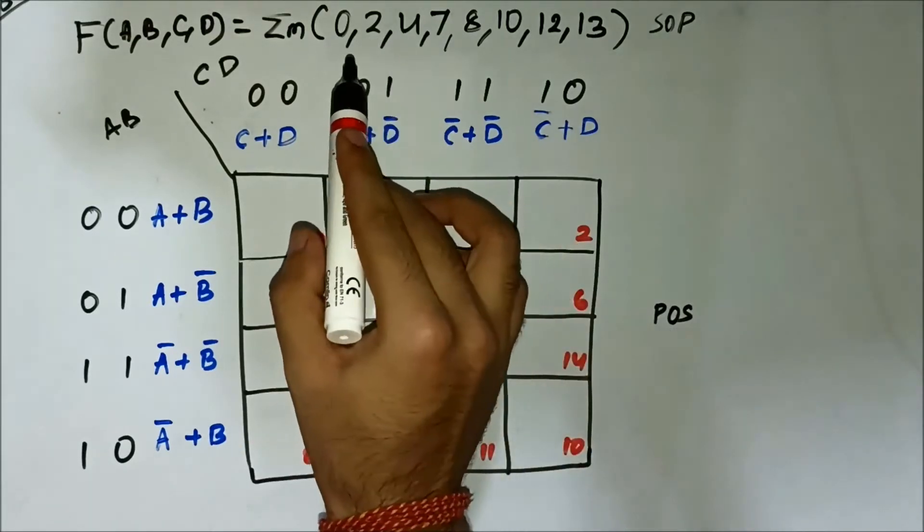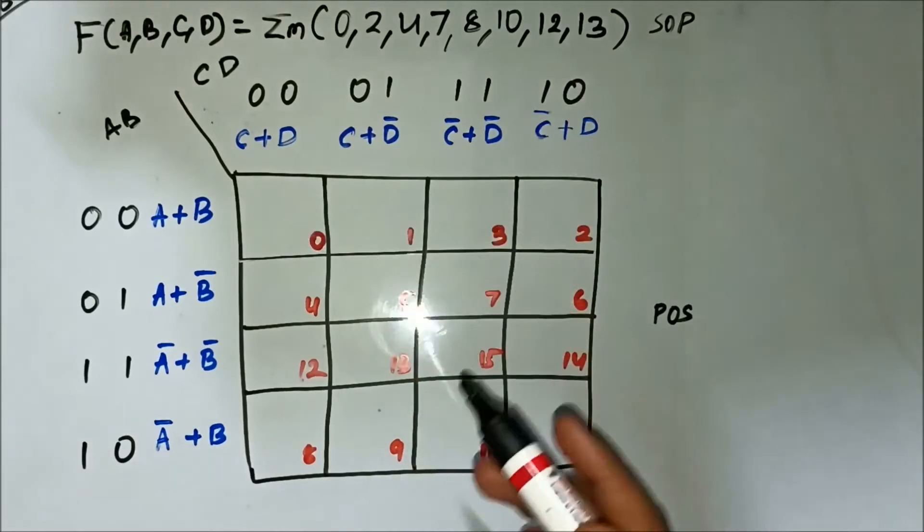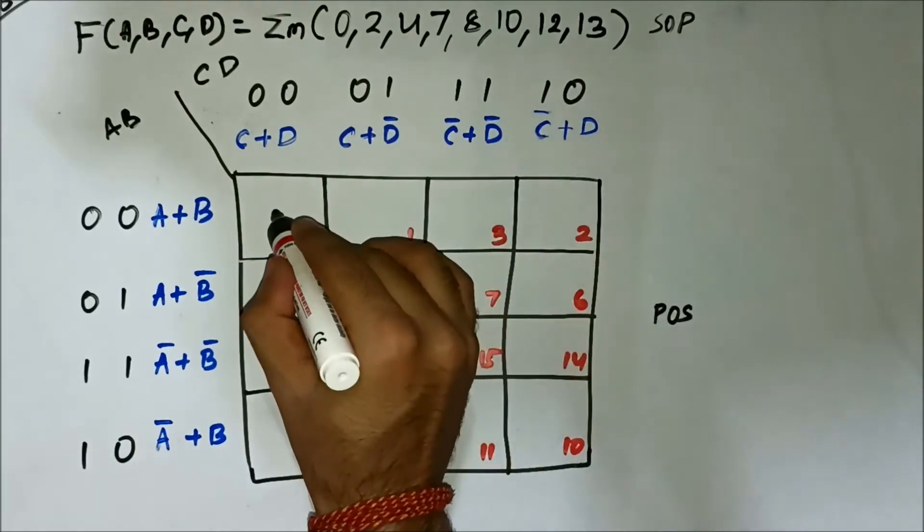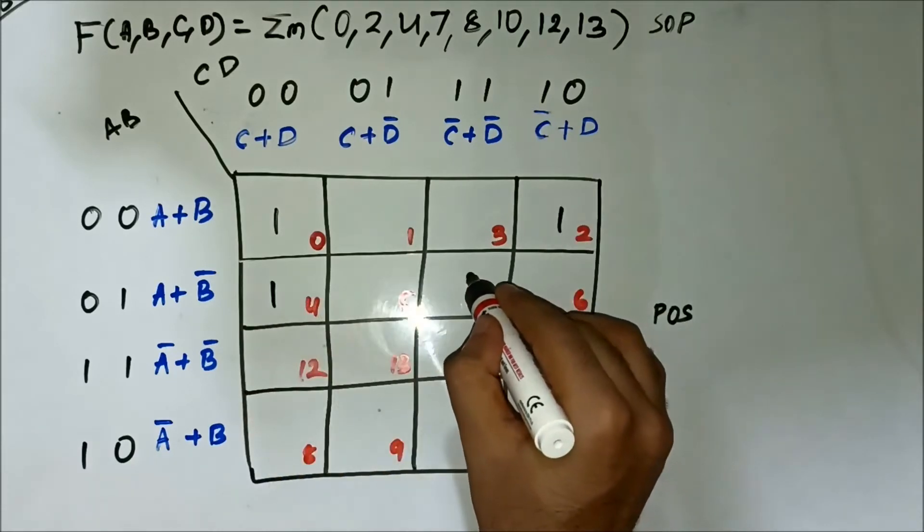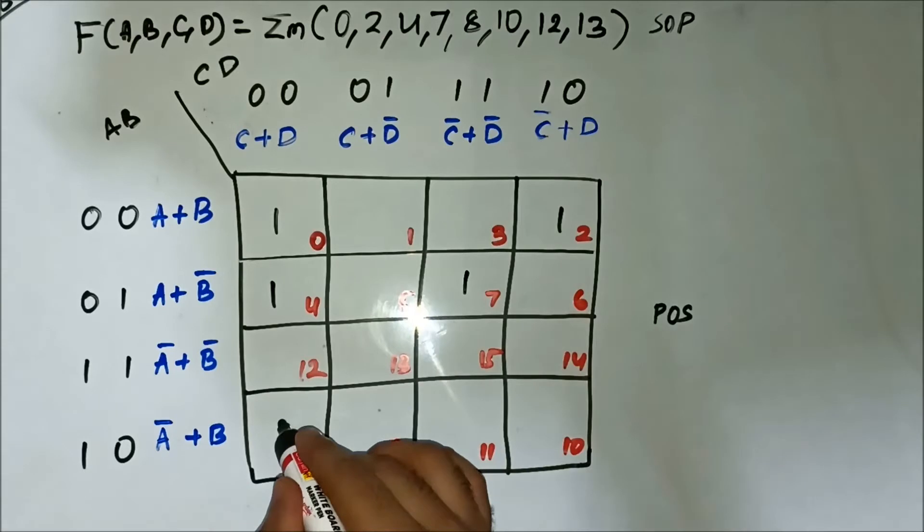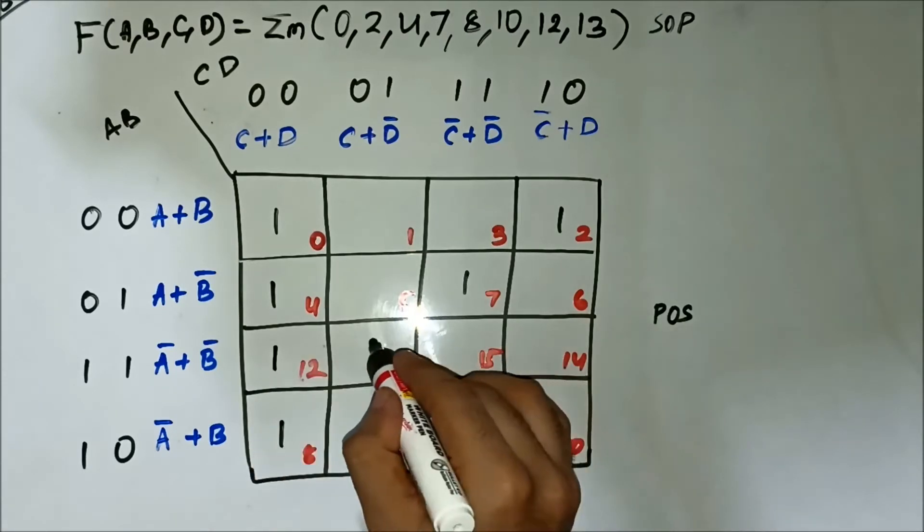The values are 0, 2, 4, 7, 8, 10, 12, 13. We will map them: 0, 2, 4, 7, 8, 10, 12, 13.